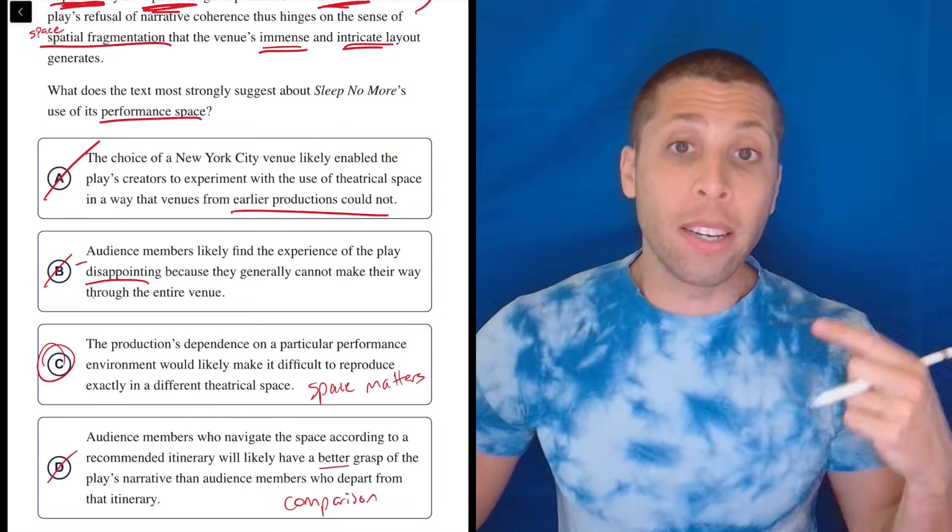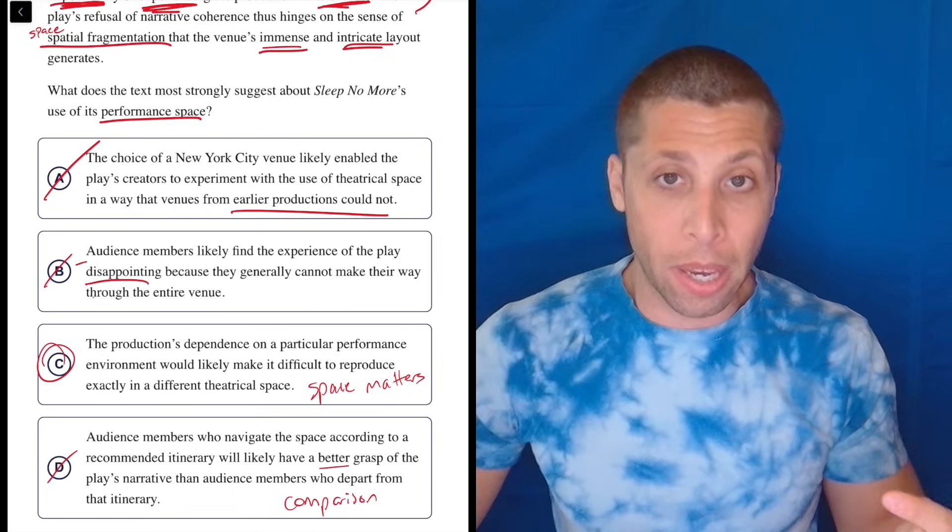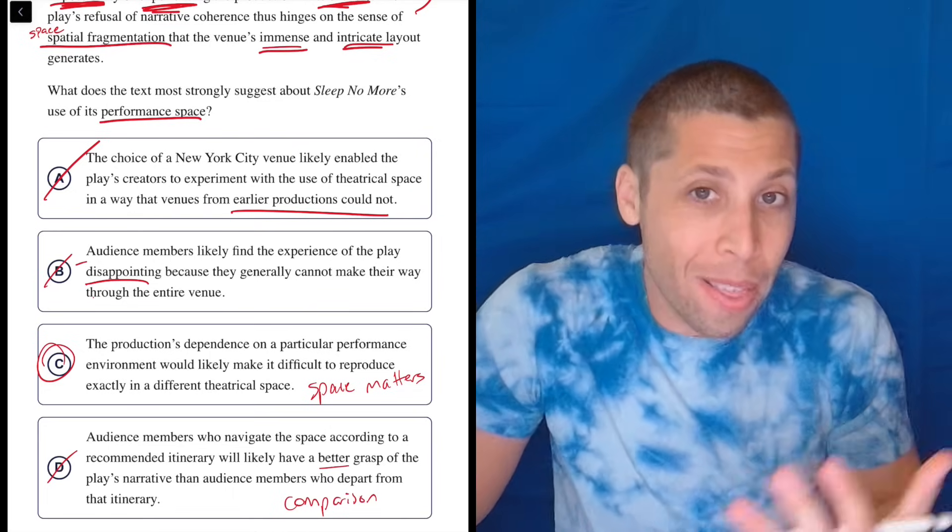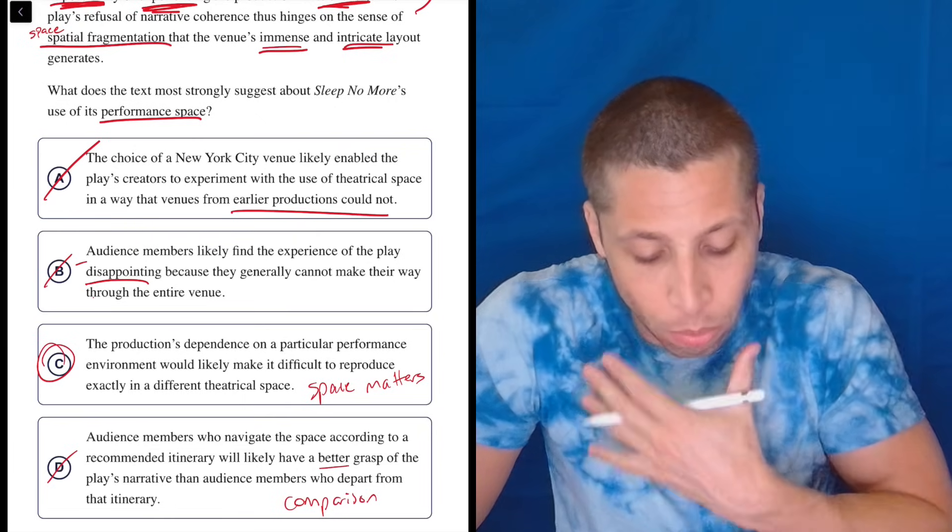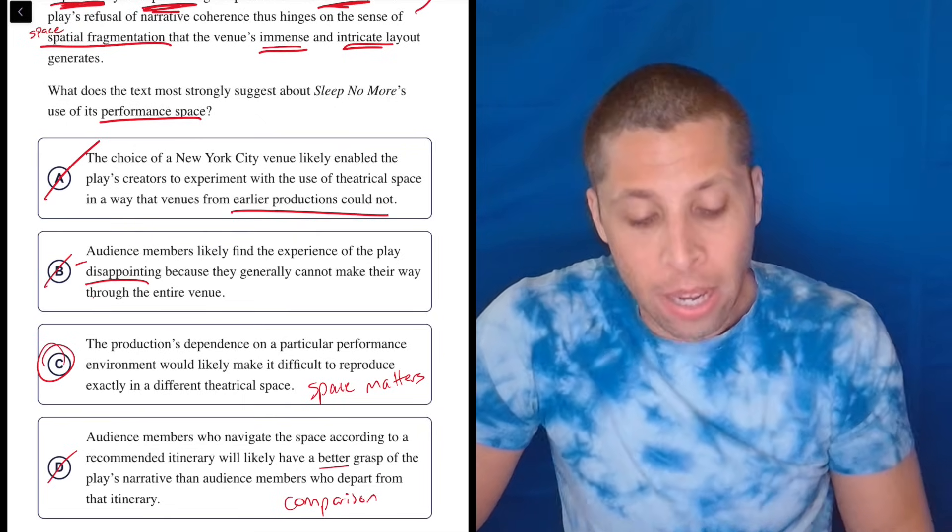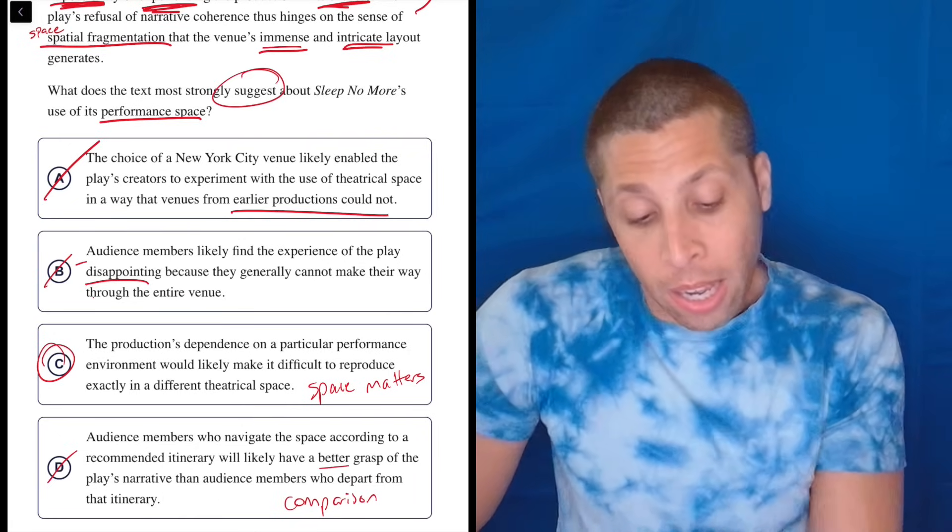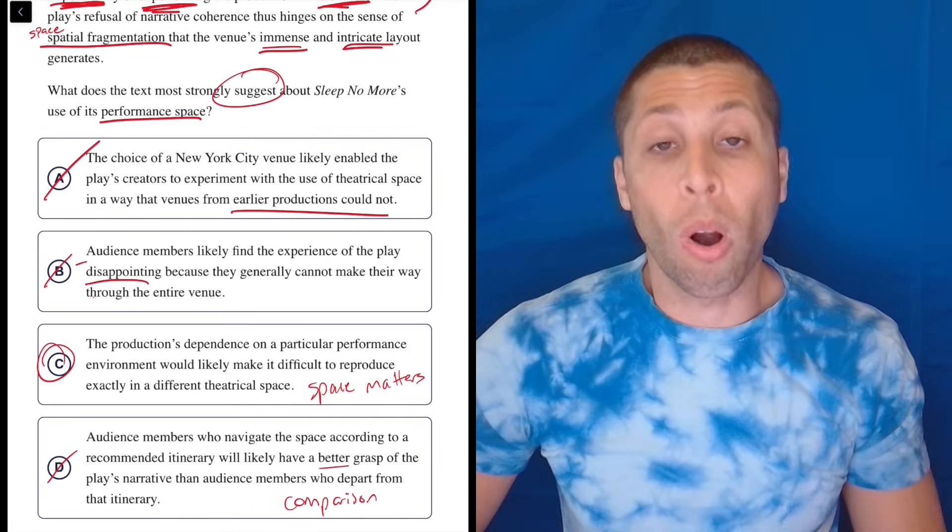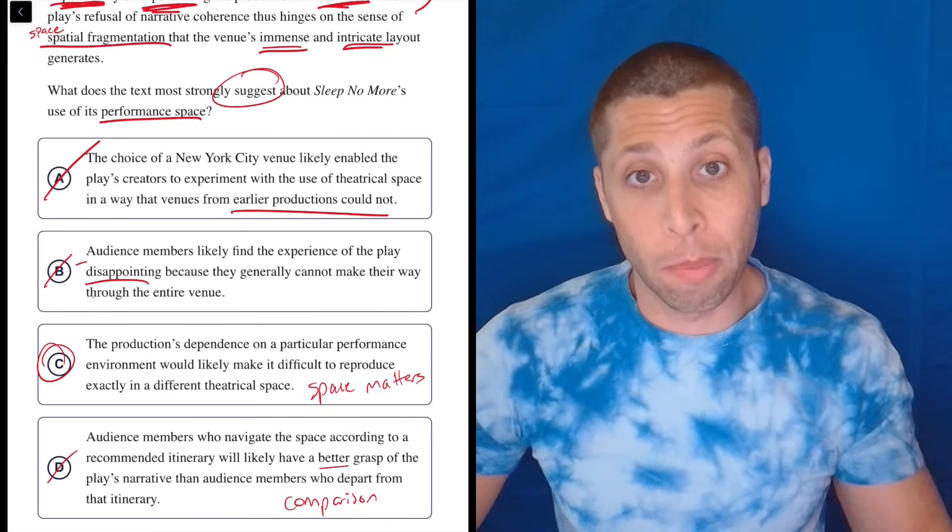Now, C, in my opinion, is making a bit of an assumption. It is going beyond what the passage itself is saying. They don't really say it would be difficult to do this in another space, but we're allowed to kind of infer that because notice the question does say which most strongly suggests or what is most strongly suggested.